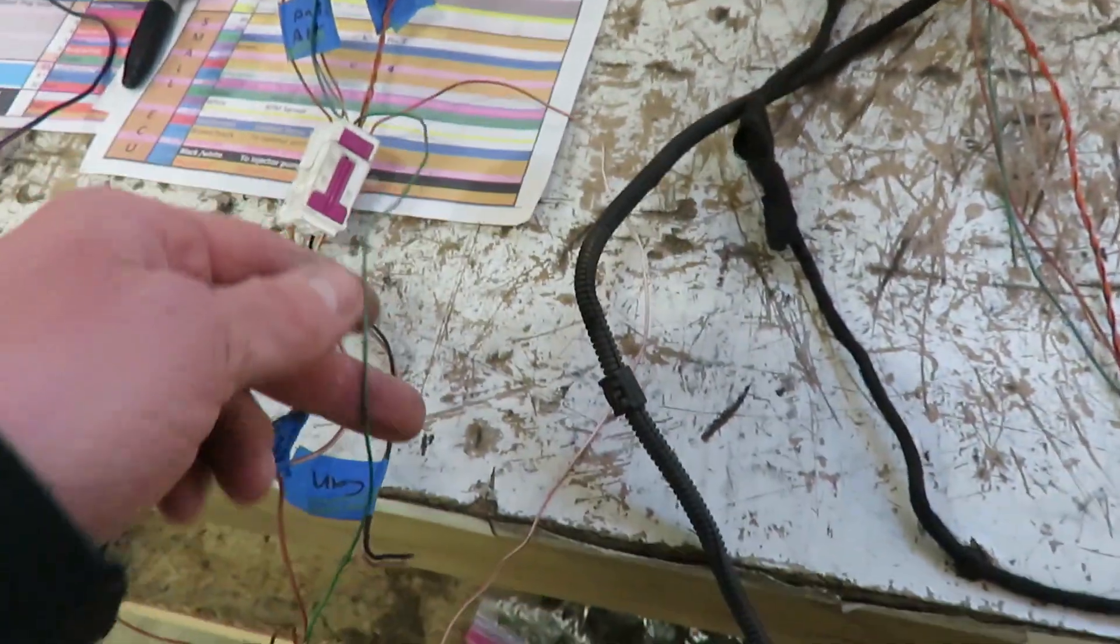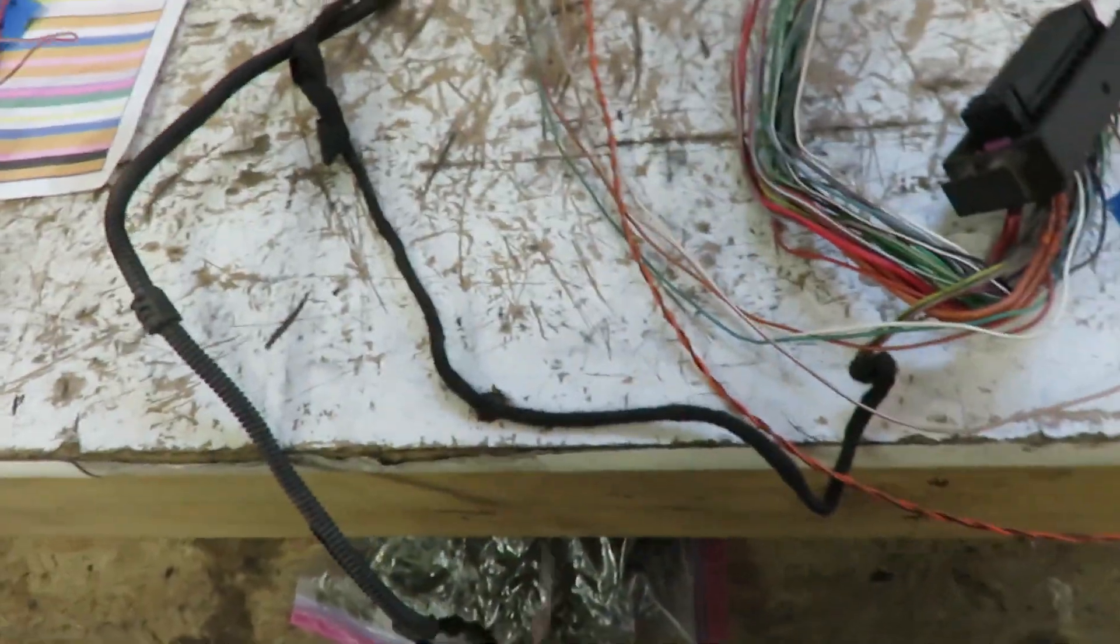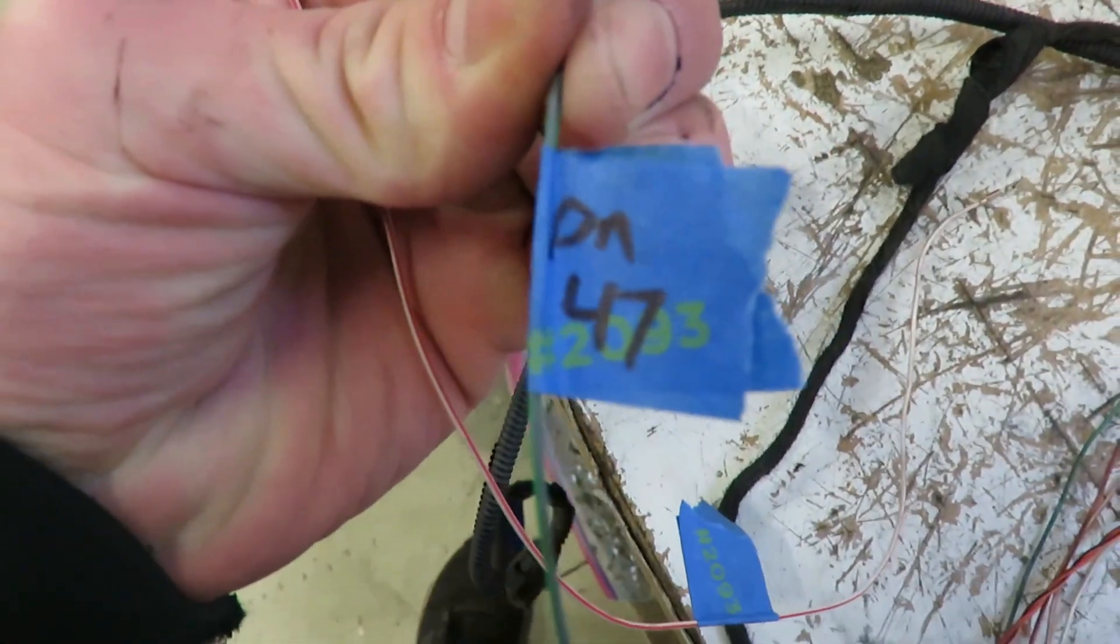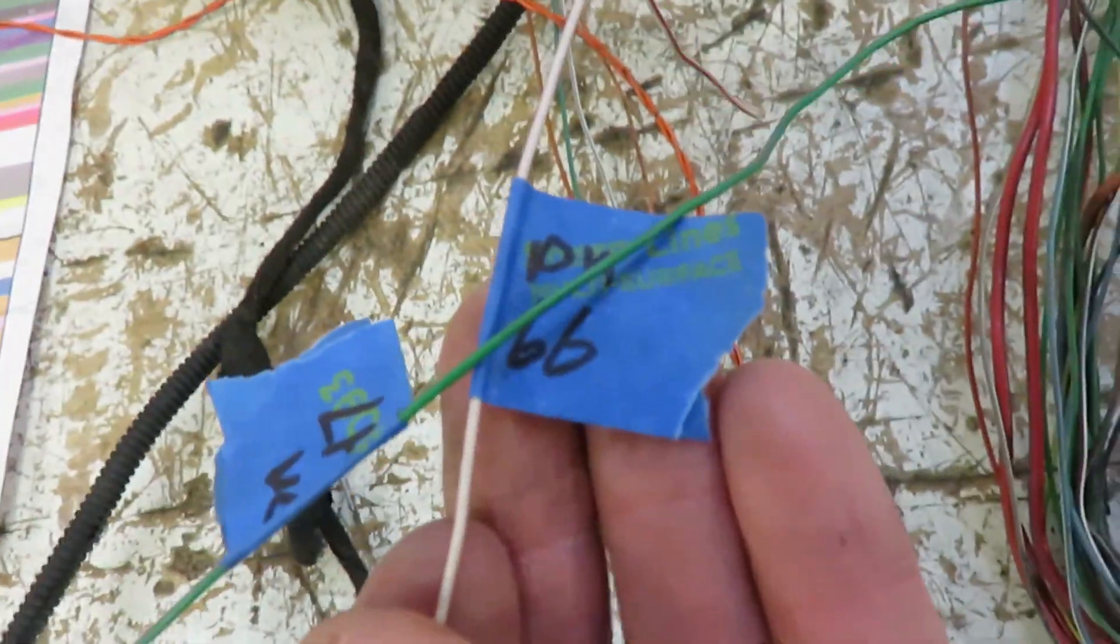So I'm going through and pulling these out and just to be on the safe side, every wire I pull out of the ECU I'm labeling pin 47, pin 66.